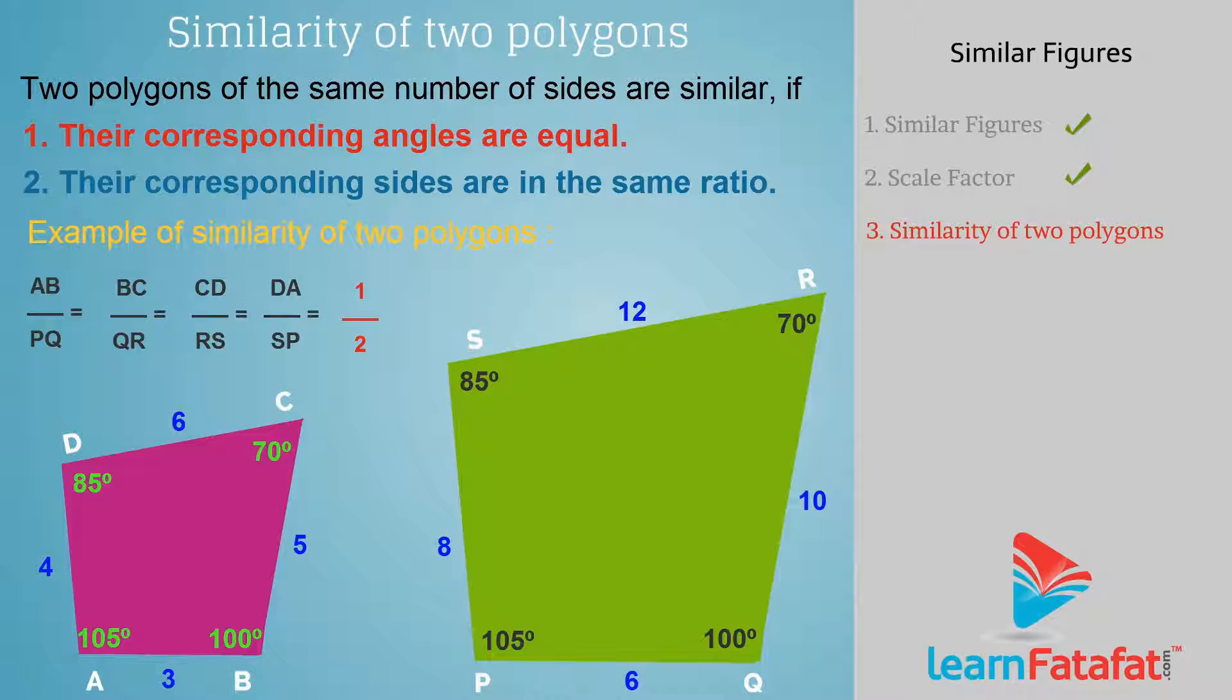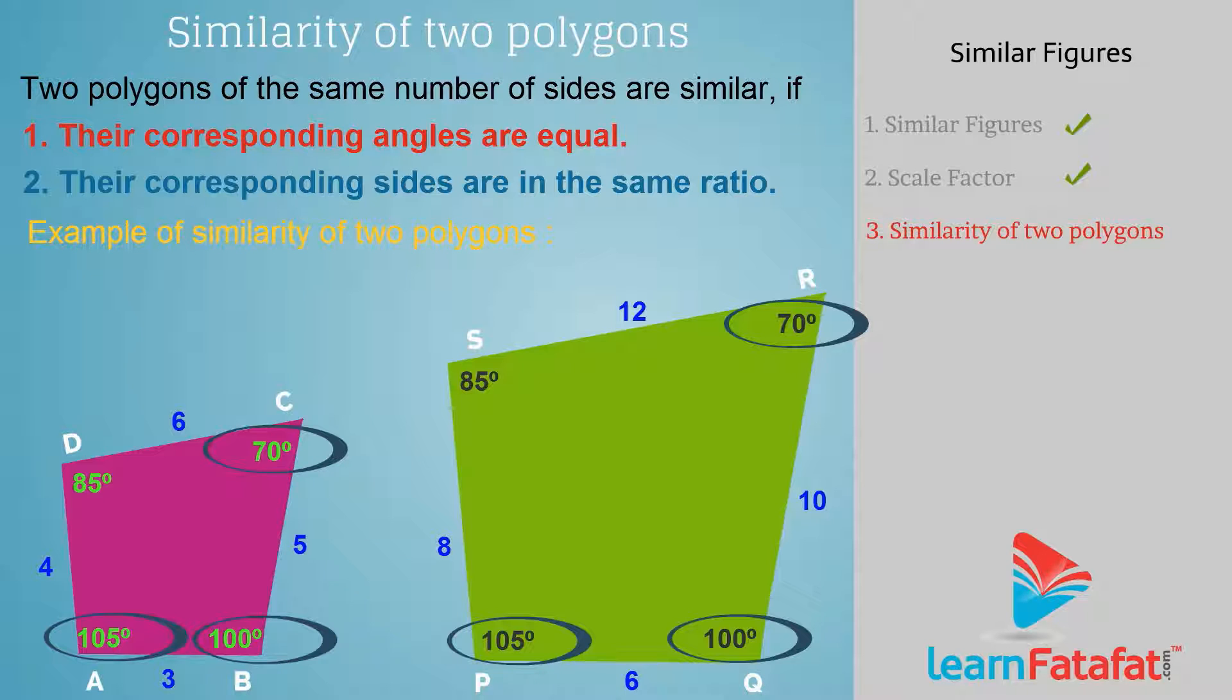Quadrilaterals ABCD and PQRS are similar since the ratio of sides AB divided by PQ, BC divided by QR, CD divided by RS, DA divided by SP is the same, that is 1 divided by 2. And angle A equals angle P, angle B equals angle Q, angle C equals angle R, and angle D equals angle S.